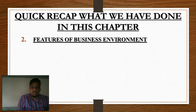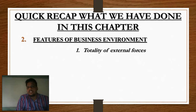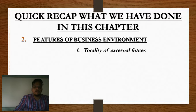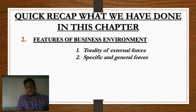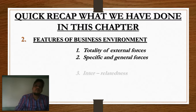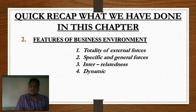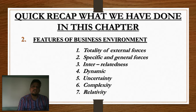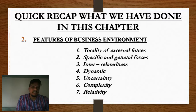I will not go into detail with what we have done, but I will give a rough overview. The first point was totality of external forces — business environment is an external force which cannot be controlled by business organizations. Point two: specific and general forces. Point three: interrelatedness. Point four: dynamic. Point five: uncertainty. Point six: complexity. Point seven: relativity. These seven points were seen in detail in earlier videos.